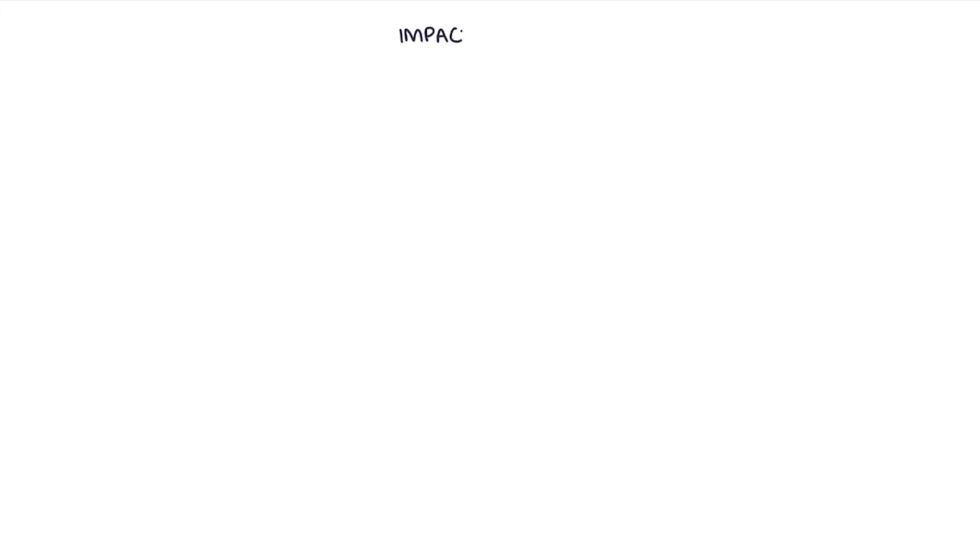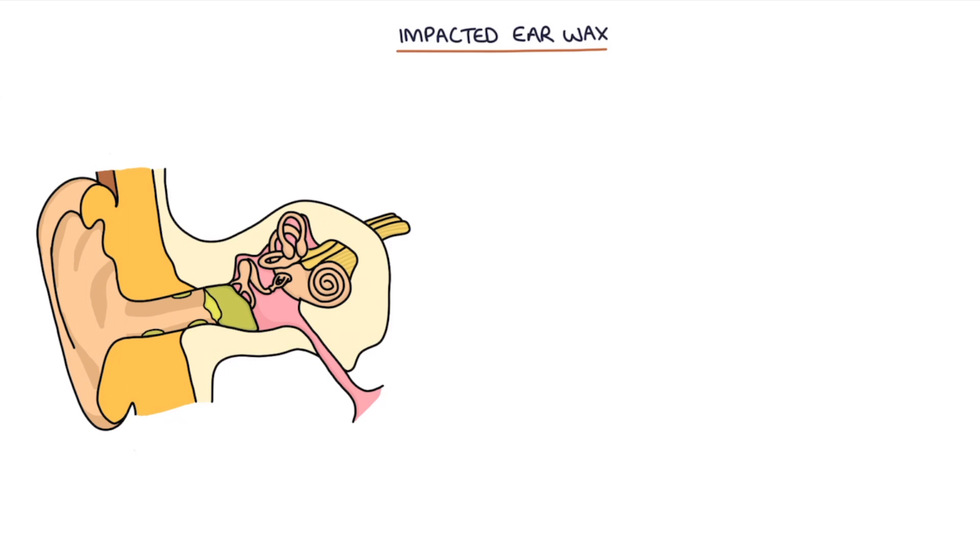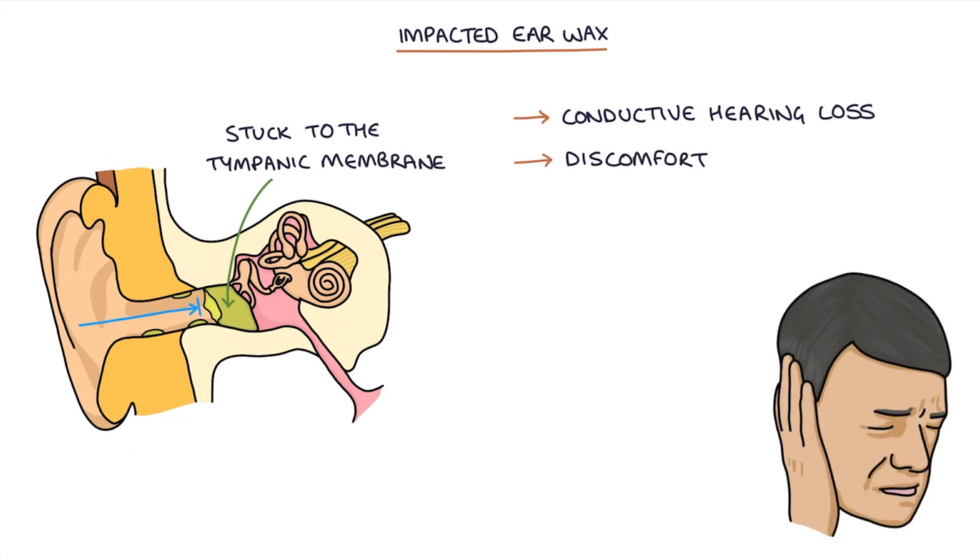Let's talk about impacted earwax. Earwax can build up and become impacted and stuck to the tympanic membrane or the eardrum. This can result in conductive hearing loss because sound cannot travel into the inner ear, discomfort in the ear, a feeling of fullness in the ear, pain or discomfort and tinnitus, which is a ringing or added sound in the ear.